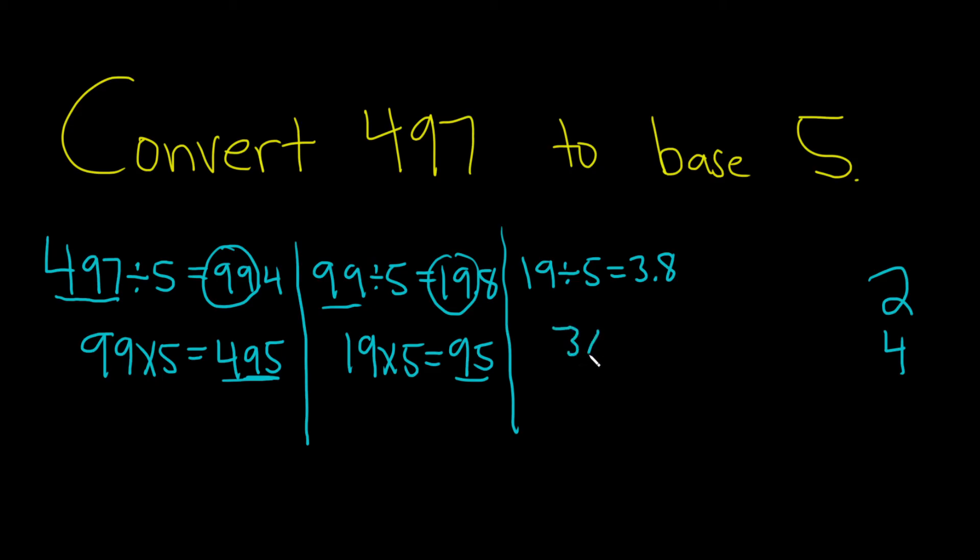So 3 times 5. You take this number and multiply it by 5, you get 15. Then you subtract and get 4. This remainder is 4.